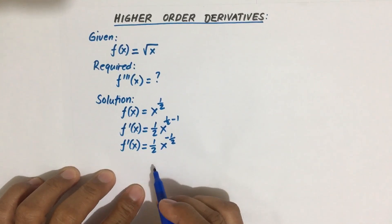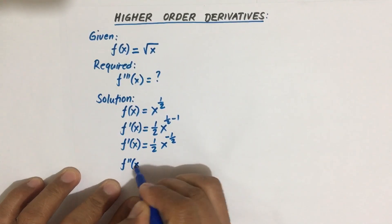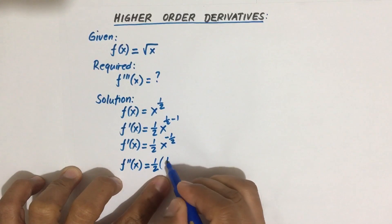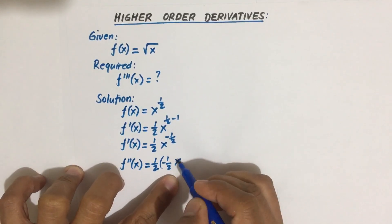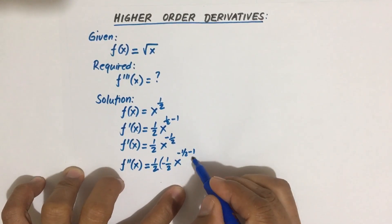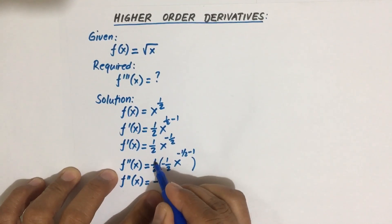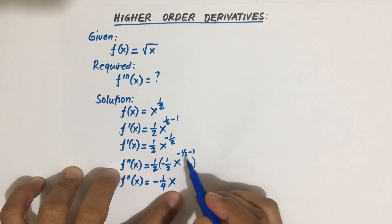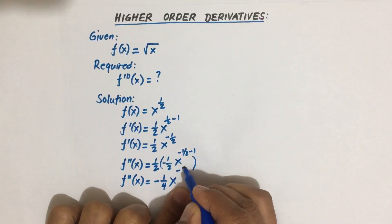That's our first derivative, f prime of x. Now solving for f double prime, the second derivative. We have one-half, then again by the power rule, negative one-half times x to the power negative one-half minus one. So f double prime of x equals positive one-half times negative one-half, which is negative one-fourth, times x to the power negative three-halves — since negative one-half minus one equals negative three-halves.